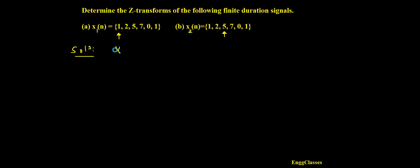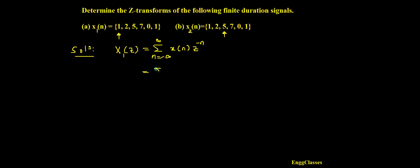We already know the formula to find the z-transform of any sequence. X(z) is equal to the summation from n equals minus infinity to infinity of x(n) times z to the power minus n. This is the general formula. Now I need to change the limits since these are finite duration sequences.